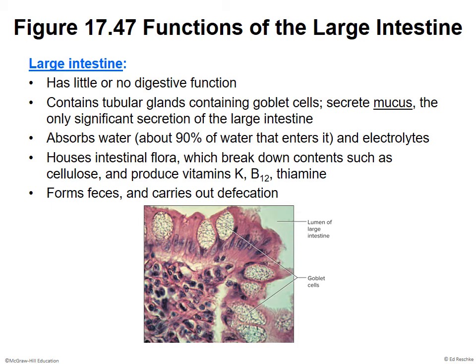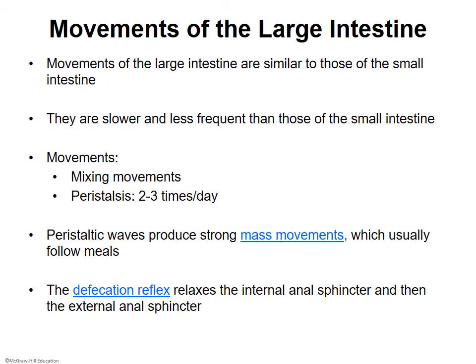The large intestine forms feces by removing water and ultimately eliminates waste in a process called defecation. Movements of the large intestine are similar to those of the small intestine but slower and less frequent. Peristaltic waves produce strong mass movements that usually follow meals. This is why young children who haven't trained their digestive system often need to use the bathroom shortly after food arrives.